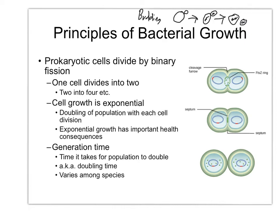Sometimes when bacteria divide, they don't completely separate, but they are two separate cells at that point. This means that every time bacteria reproduce, they basically double in number. Relatively fast-growing bacteria, like E. coli, can easily complete this entire process — from starting to replicate the genome all the way through completing division — in about an hour.